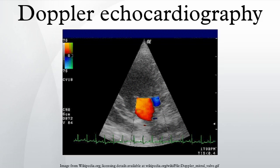Doppler echocardiography is a procedure that uses ultrasound technology to examine the heart or blood vessels. An echocardiogram uses high-frequency sound waves to create an image of the heart, while the use of Doppler technology allows determination of the speed and direction of blood flow by utilizing the Doppler effect. An echocardiogram can, within certain limits, produce accurate assessment of the direction of blood flow and the velocity of blood and cardiac tissue at any arbitrary point using the Doppler effect.